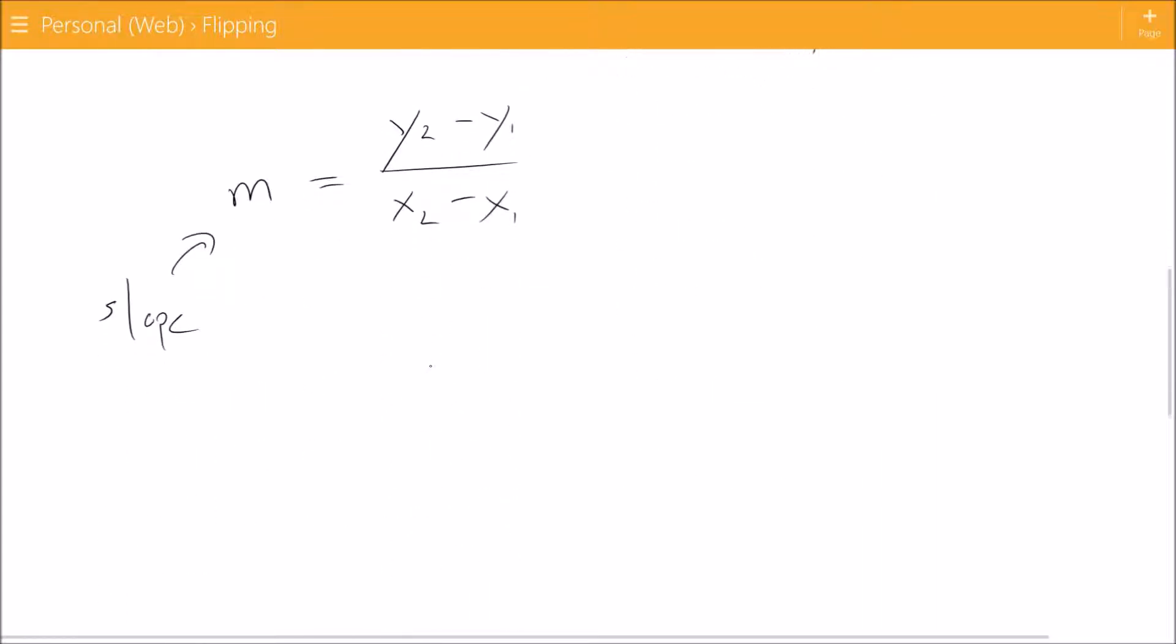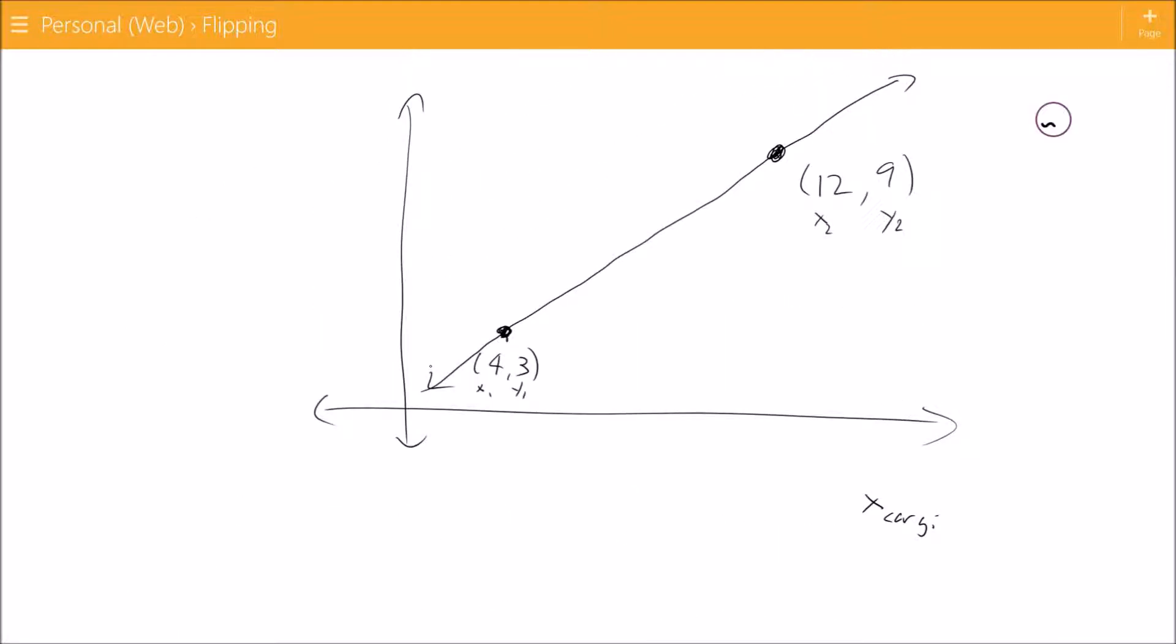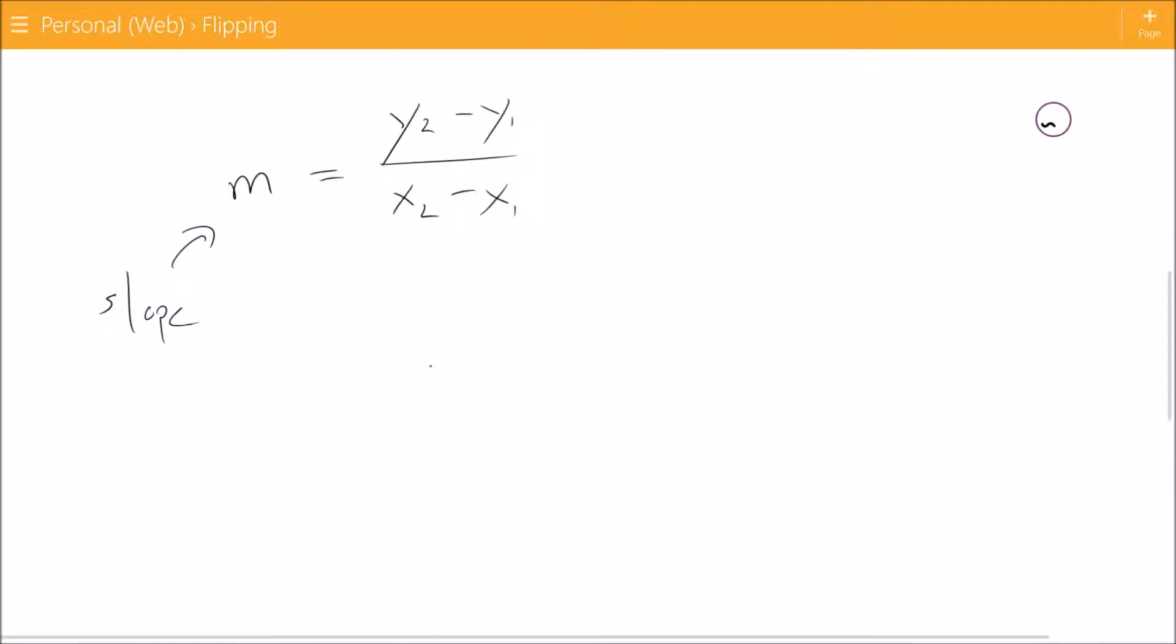Alright so I've got my two points. In this case I have 12 and 9, that's from my second point over there to the right, so we said that the x was 12, that's x2, and 9 was my y2.